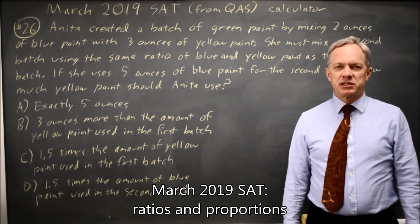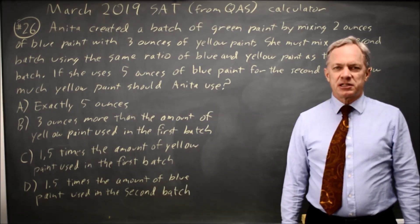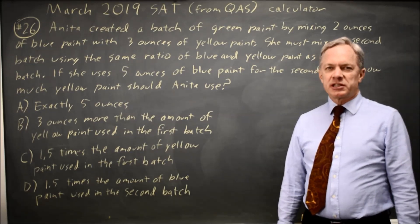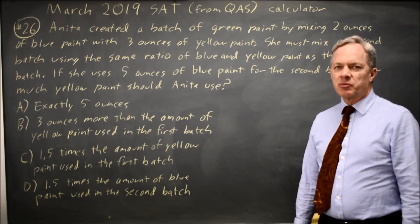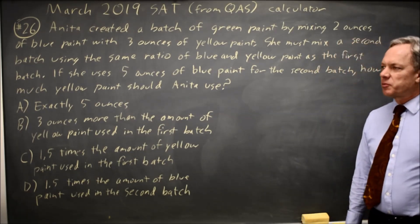This is calculator question number 26 from the March 2019 SAT exam. College Board is asking a ratio question about mixing blue and yellow paint to get green.